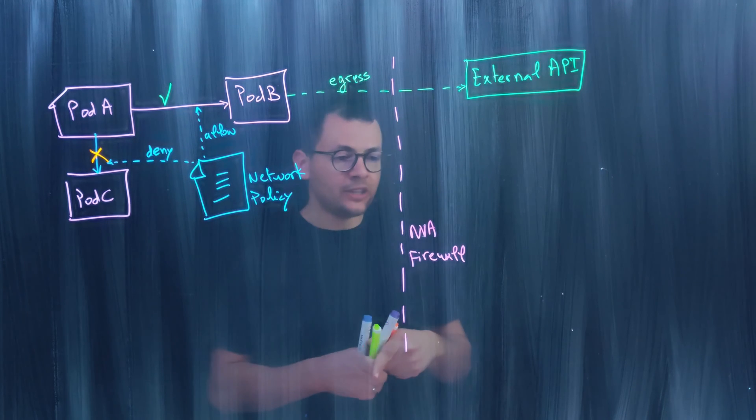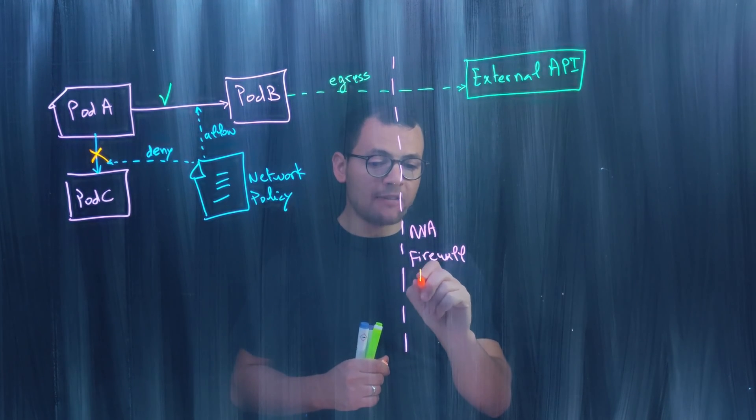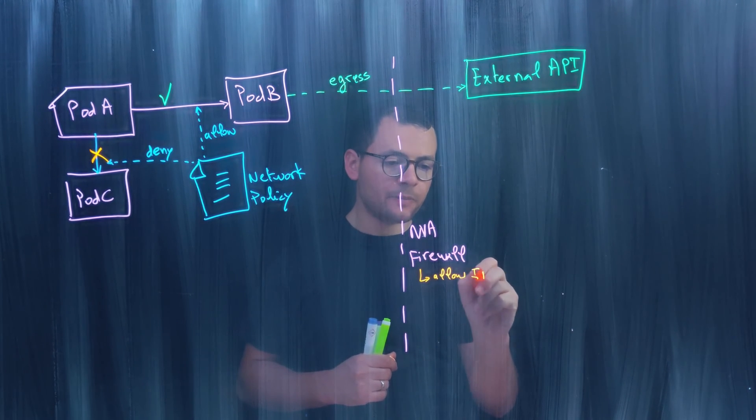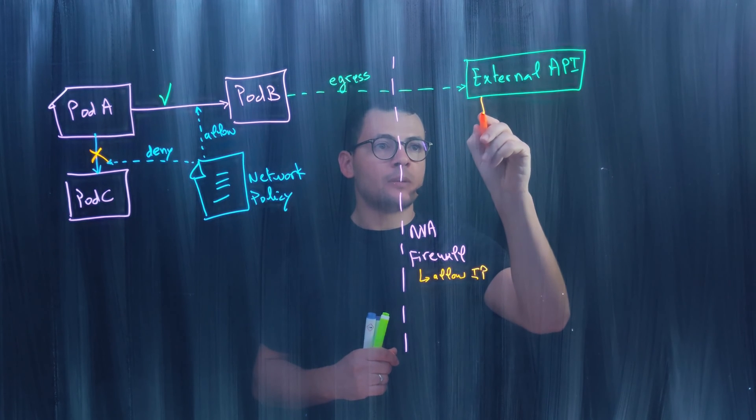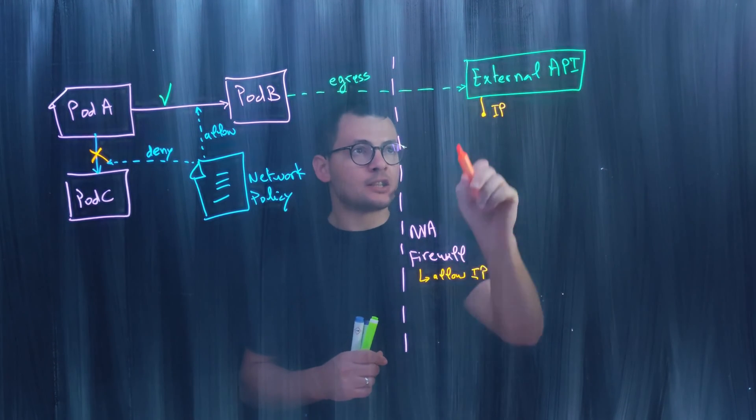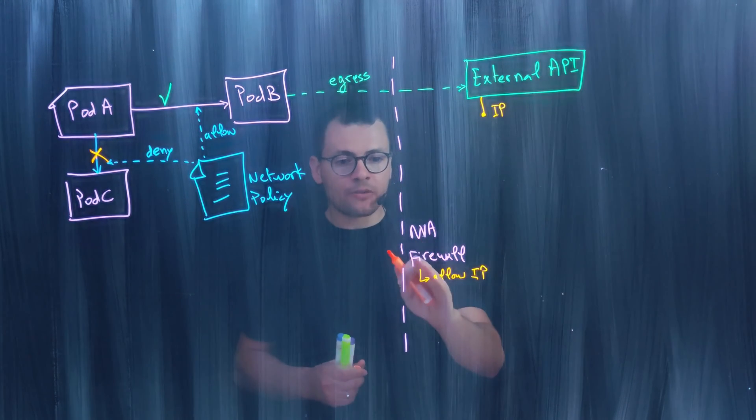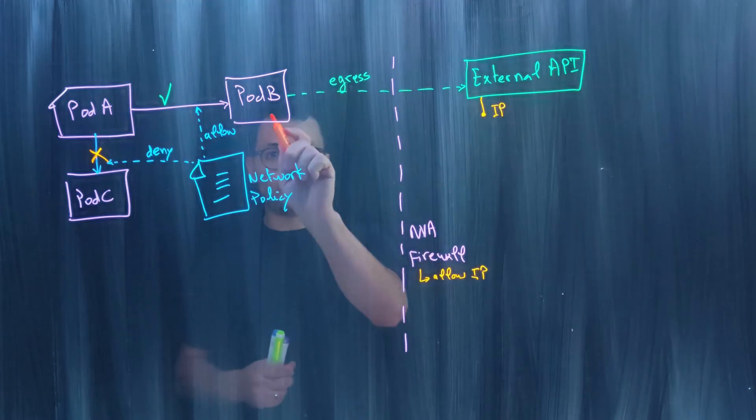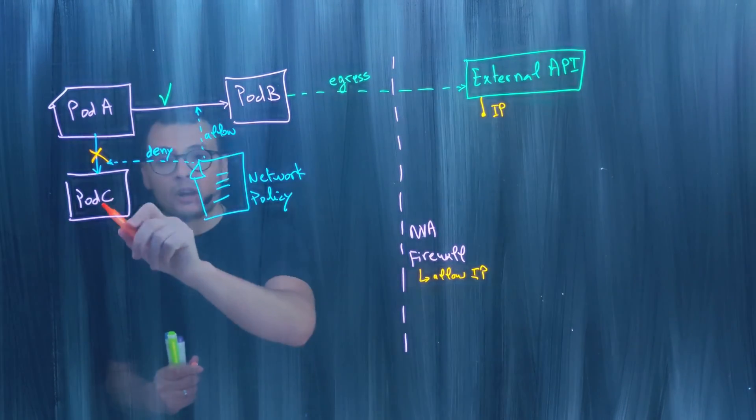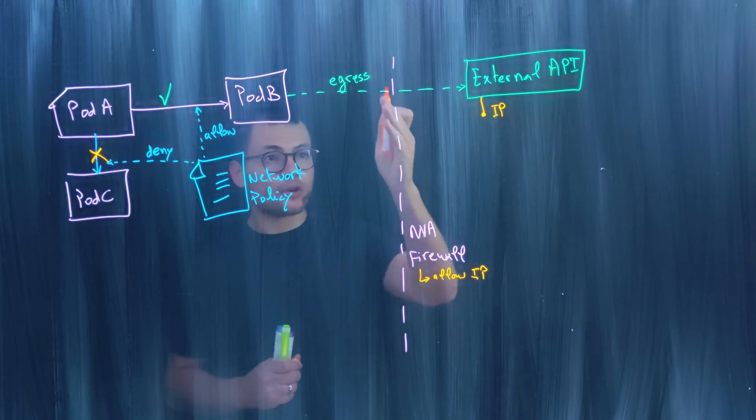At the firewall level, the way we filter this traffic is by relying on IPs. We would have a list for allowed services by IP. Typically this external API would have an IP address, so we can allow access to that external API. The issue here is that if we do that at the firewall level, it means Pod B will be able to access, but also Pod C who doesn't require access will also get access because the level of filtering is for the firewall.